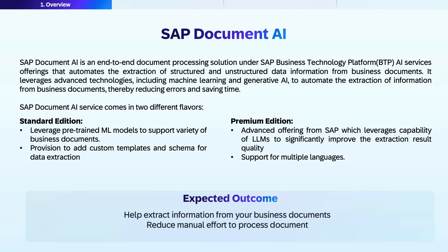SAP Document AI service comes in two different flavors. The first is the standard edition. In this edition, SAP provides a pre-trained machine learning model which supports a variety of business documents — for example, invoices, purchase orders, etc. This will help business users to use such extraction out-of-the-box without any customization.